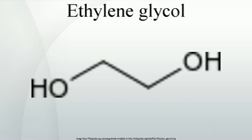In 1860, Wurtz prepared ethylene glycol from the hydration of ethylene oxide. There appears to have been no commercial manufacture or application of ethylene glycol prior to World War I, when it was synthesized from ethylene dichloride in Germany and used as a substitute for glycerol in the explosives industry. In the United States, semi-commercial production of ethylene glycol via ethylene chlorohydrin started in 1917.